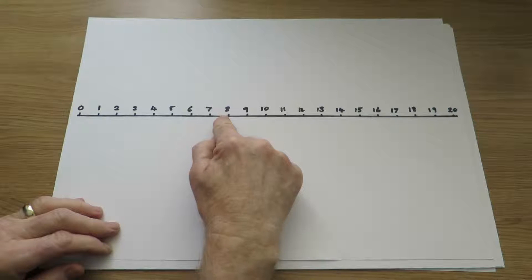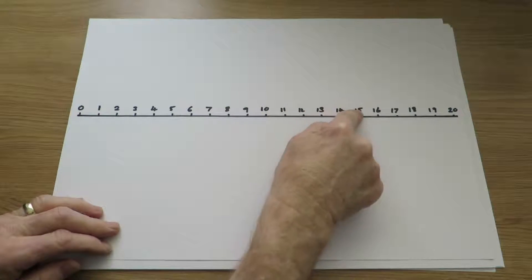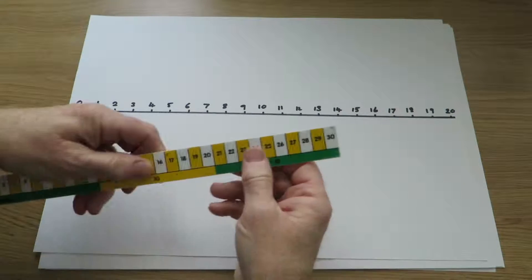So 8 add 9, 1, 2, 3, 4, 5, 6, 7, 8, 9. 8 add 9 is 17.